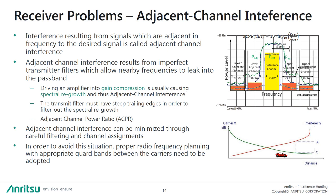Adjacent channel interference is caused by signals which are adjacent in frequency to the desired signal. This effect can be seen where the transmitter filter is not good enough, so that nearby frequencies leak into the passband of adjacent channels. A common cause is also that the interfering transmitter amplifier is driven into compression, causing spectral regrowth outside its operating band. For this reason, you may be aware of the radio test parameter called ACPR, or adjacent channel power ratio. Ways to minimize the effects include careful filtering, managing channel assignments, and using appropriate guard bands between carriers.